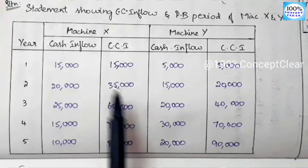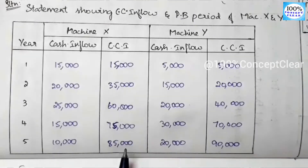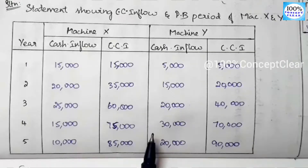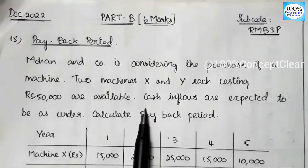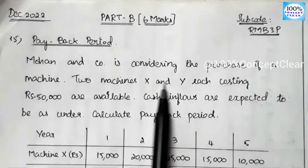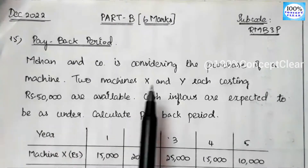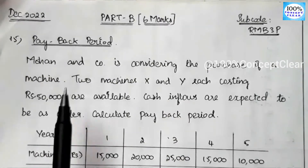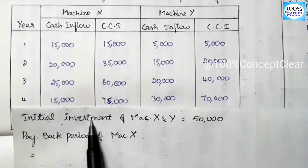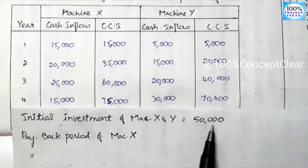We have to calculate the payback period for each machine. The initial investment for Machine X and Machine Y is Rs. 50,000 each. So the initial investment amount is Rs. 50,000.